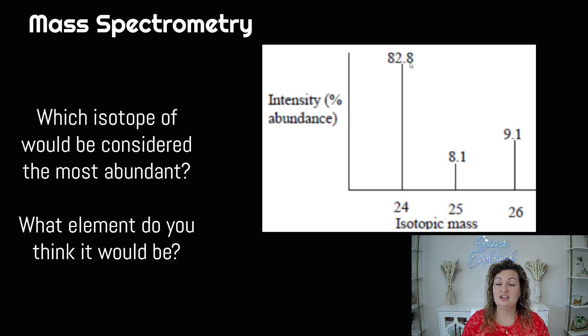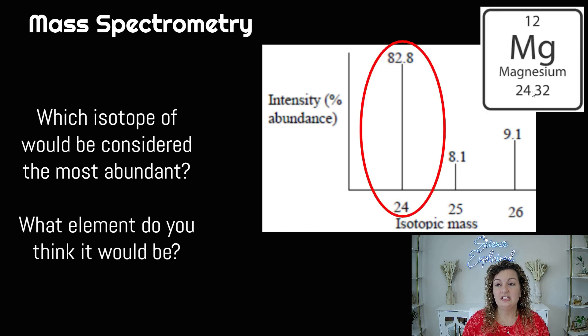And which element do you think this would be? This doesn't say on our graph. So we have to go back to our periodic table and try to figure this out. If I look up on the periodic table, the mass of 24, I can see if I'm going through each little square that 24.32 is magnesium. I would want to find an element that is super close to 24 but is just over it.